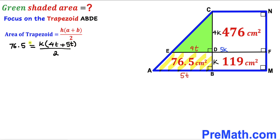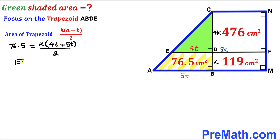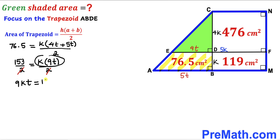We can write 76.5 as 153/2. Since 4t + 5t = 9t, the equation becomes 153/2 = k × 9t / 2. The 2s cancel from both denominators, giving us 9kt = 153. Dividing both sides by 9, we get kt = 17.